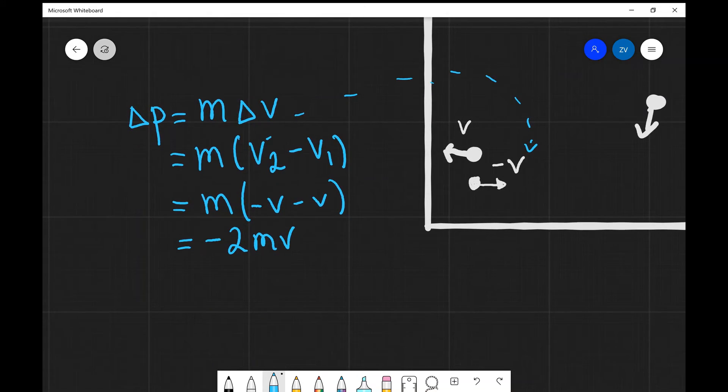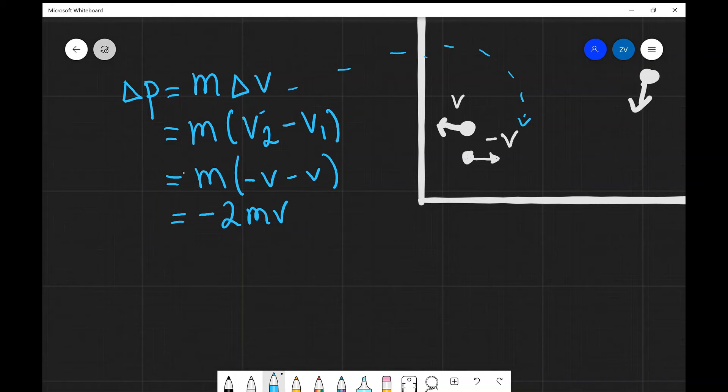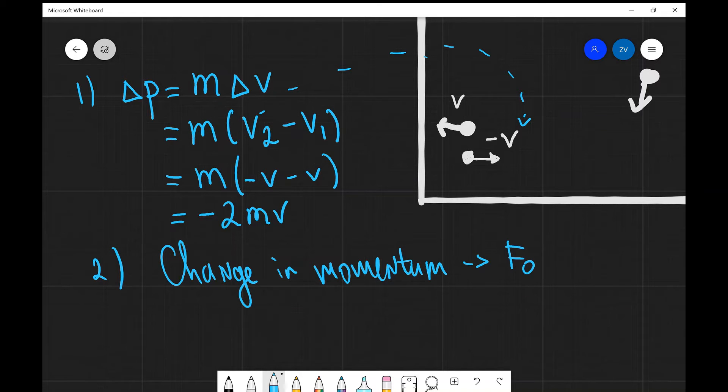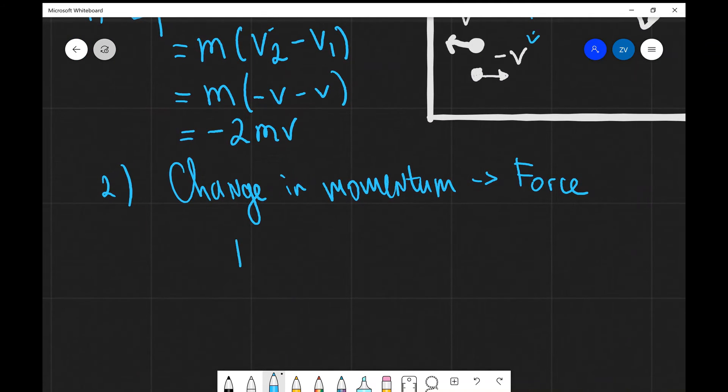Every time we have a change of momentum, that was our first step. However, our second step: we'll need to remember that anytime we have a change in momentum, that actually leads to a force, a net force. This is what Newton's second law tells us. In fact, it tells us that the net force is actually proportional to the rate of change of that momentum. We know that our change of momentum is minus 2mV, so minus 2mV divided by delta T.